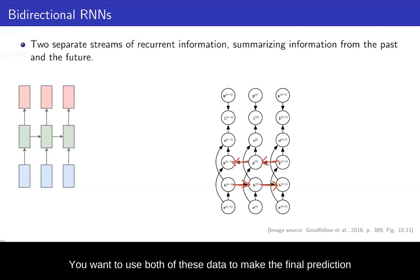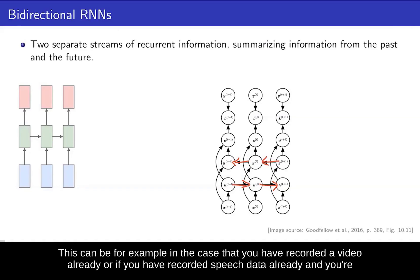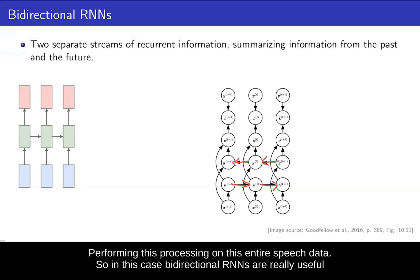And you want to use both of these data to make the final prediction. Note that you can only use this if you already have the information from the future in the given time step. This can be, for example, in the case that you have recorded a video already or if you have recorded speech data already and you're performing this processing on this entire speech data. So in this case, bidirectional RNNs are really useful.